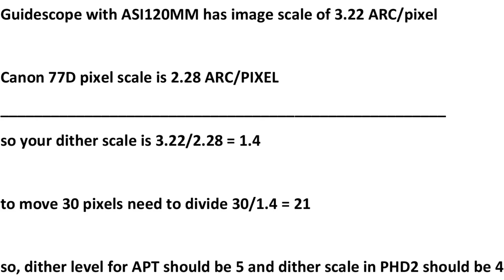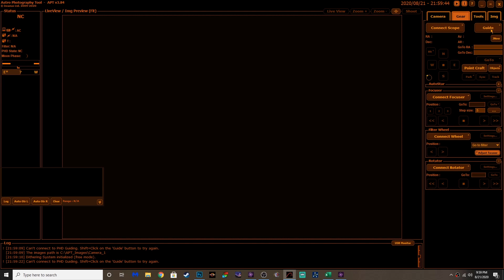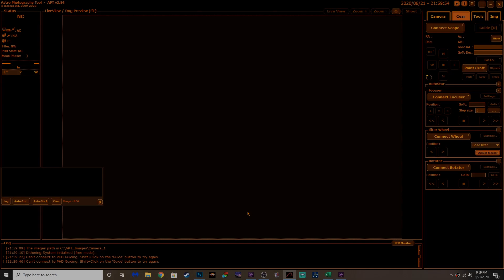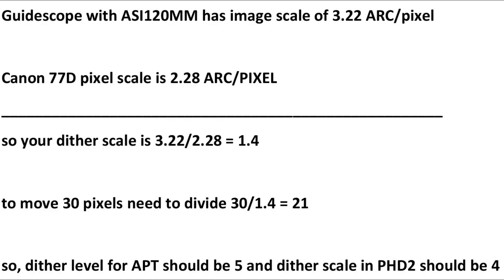So stay with me here. In order to get at least close to that number, in APT I've got to set that dither level to 5, which corresponds to a 500 microsecond pulse, and then PHD2 to 4 — and that gets me to 20, which is pretty close to that 21. So that's the calculation. If you're going for a 30-pixel scale, that's the setting you would use based on these numbers. It really is an important piece to figuring this out, and you'll see in the results how much of a difference this has made.